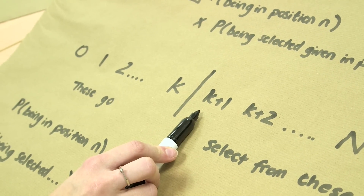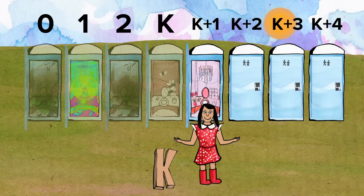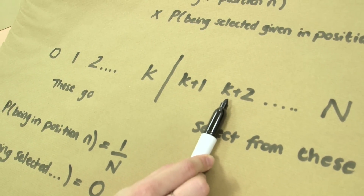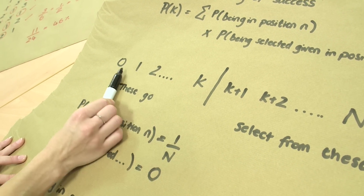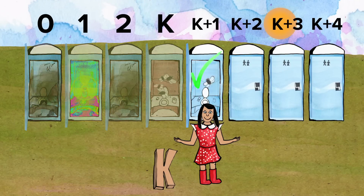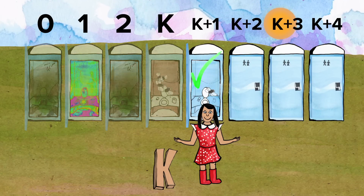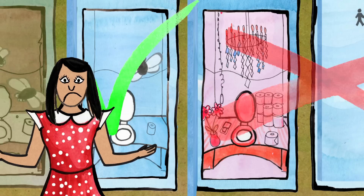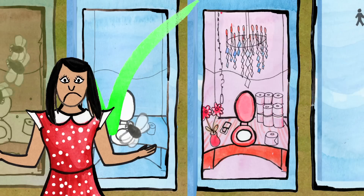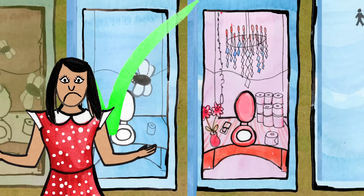So if the best toilet did happen to be at K plus 1, that's great and we have a 100% chance of picking it. But here's where things get tricky. Let's say the best toilet was actually at K plus 2, but by chance the toilet at K plus 1 was still better than all the toilets that came before it. We would have chosen that toilet and hence missed our opportunity and not selected the best toilet. So the probability of selecting the best toilet is now no longer 100%. What is the probability of choosing the best toilet if it was sitting at K plus 2?